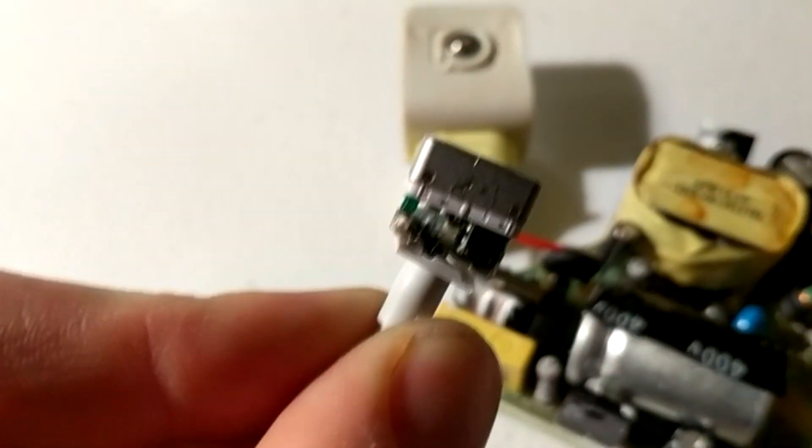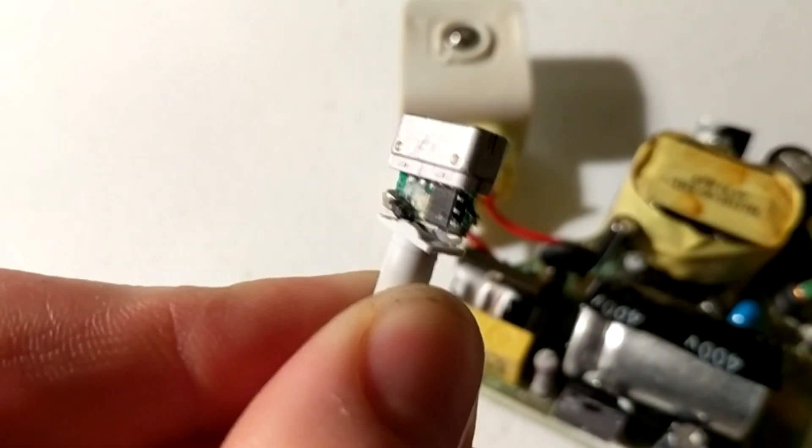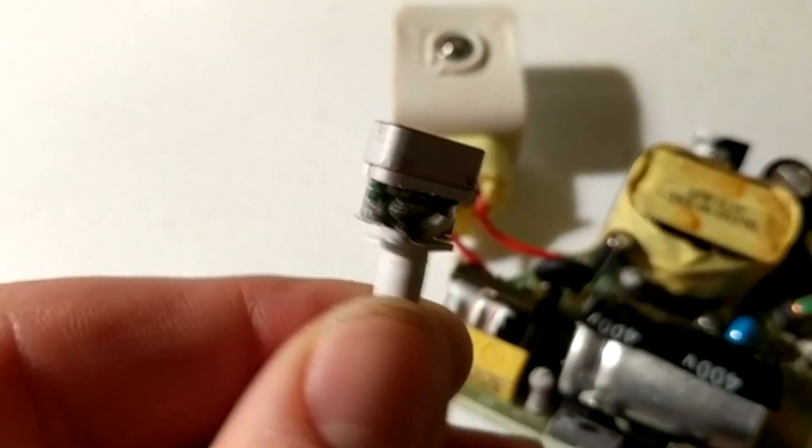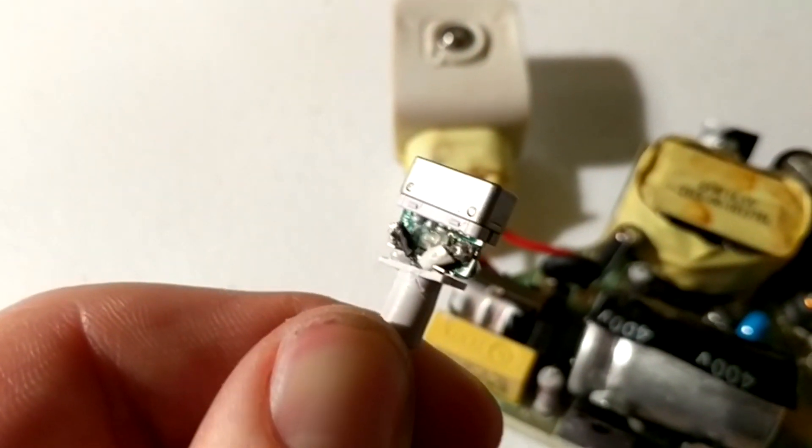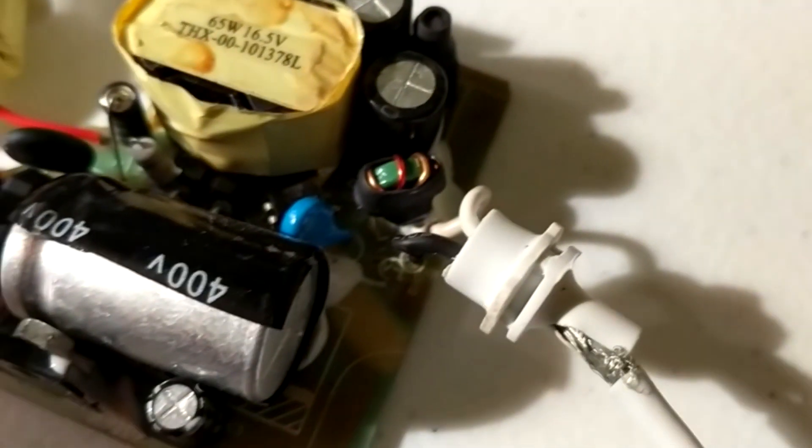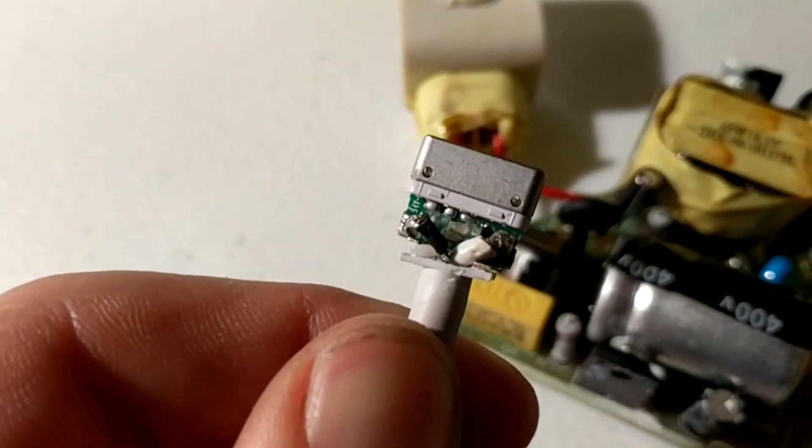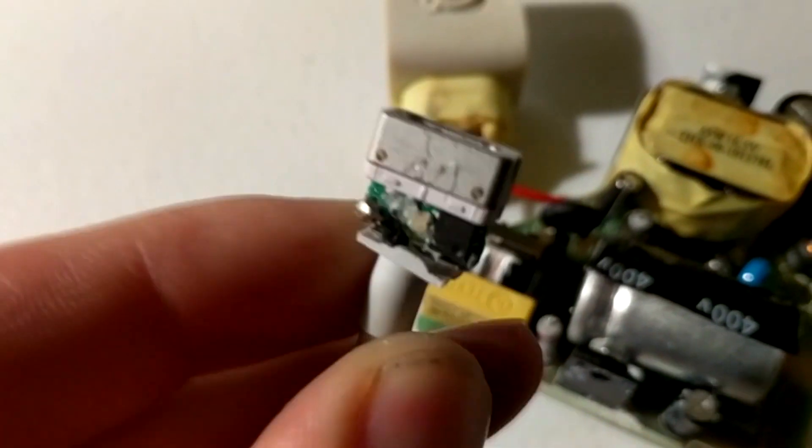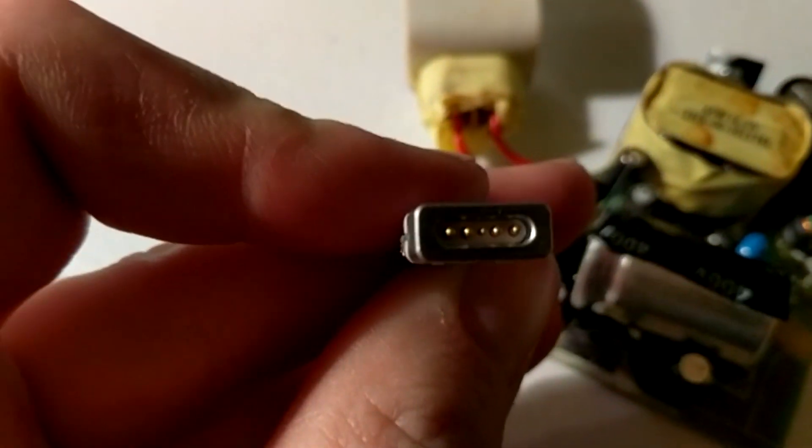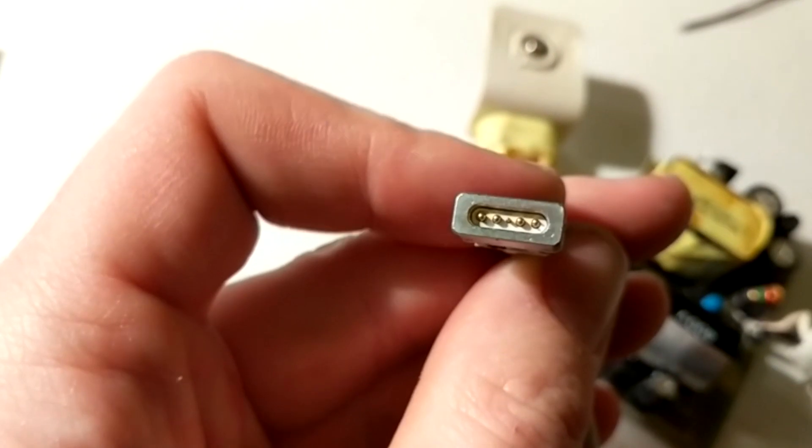This is the part that actually connects to the computer. Let's see if I can get my camera to focus. There we go. So as you can see, there's a little integrated circuit right there. And there's where those two wires, the black and white wire, connect right there. And you've got your five pins. So I actually looked up the pin out for this.